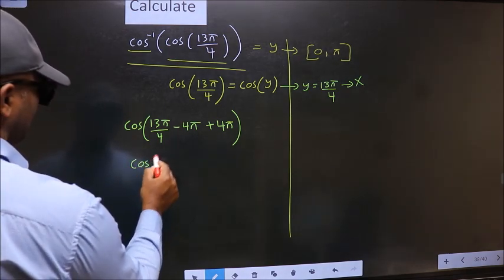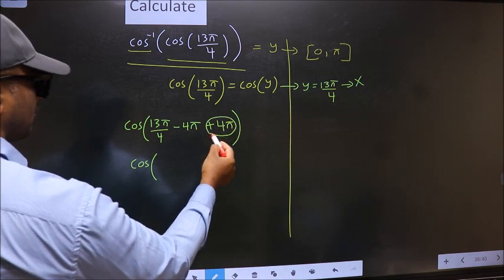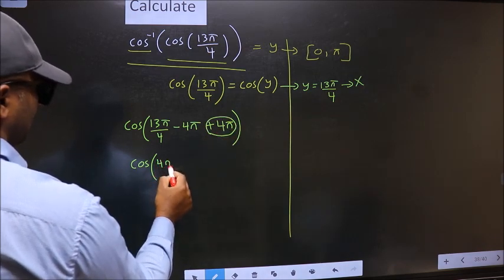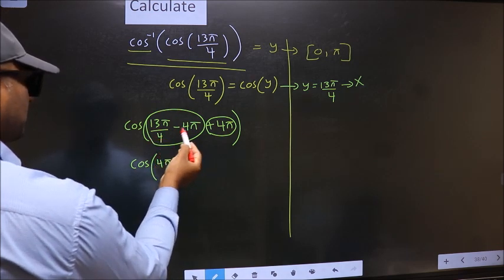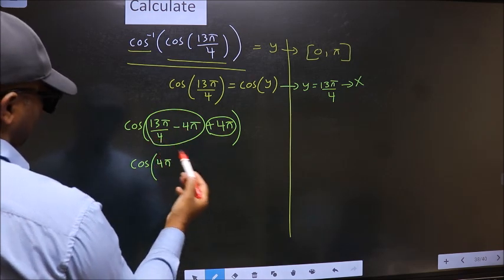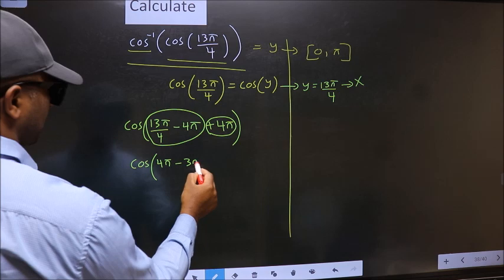Cos. Now this 4π I write at the start. And you calculate this. 13π by 4 minus 4π. We get minus 3π by 4.